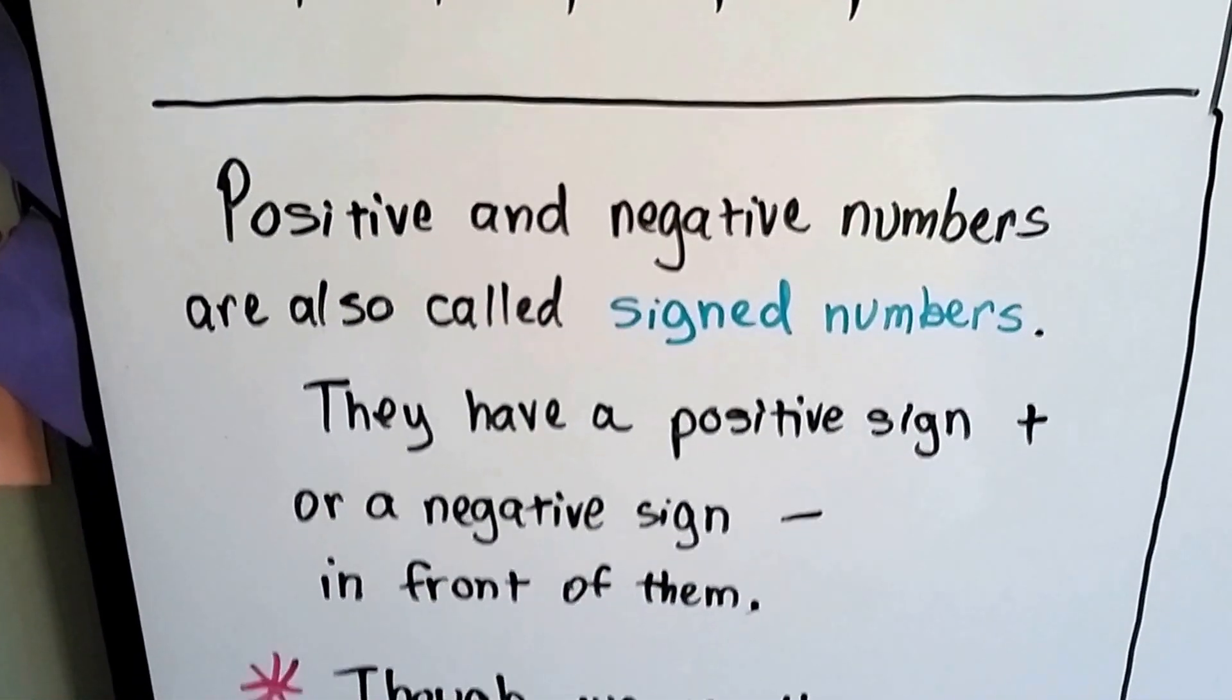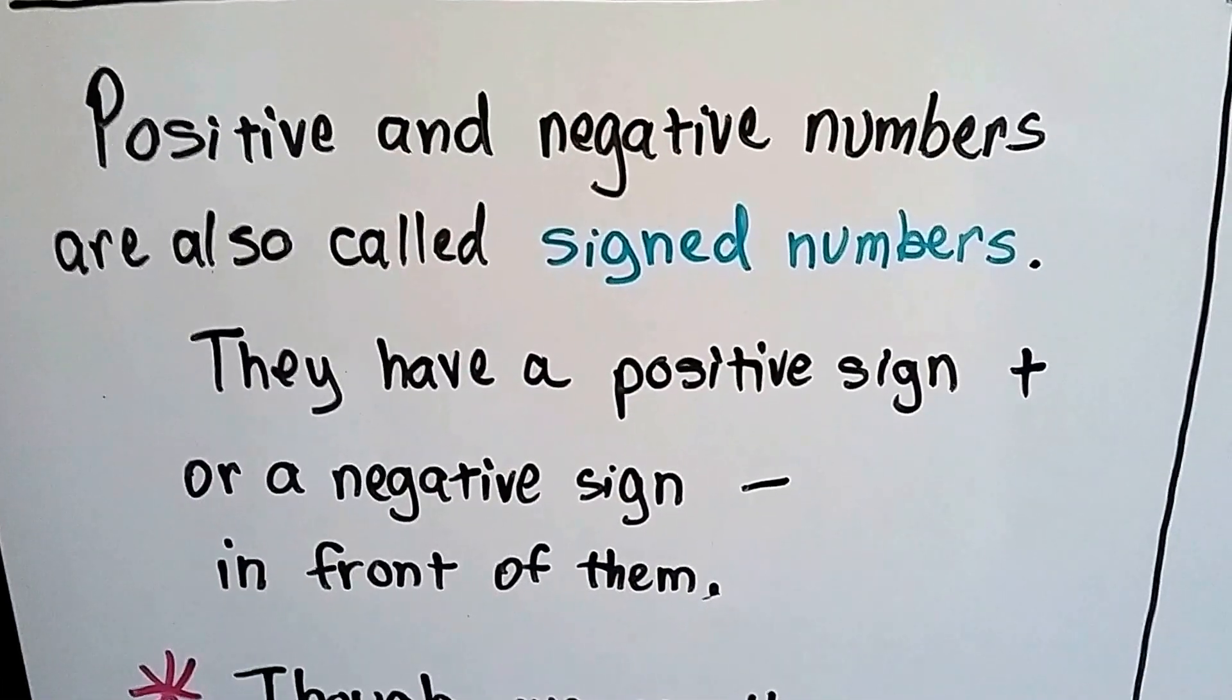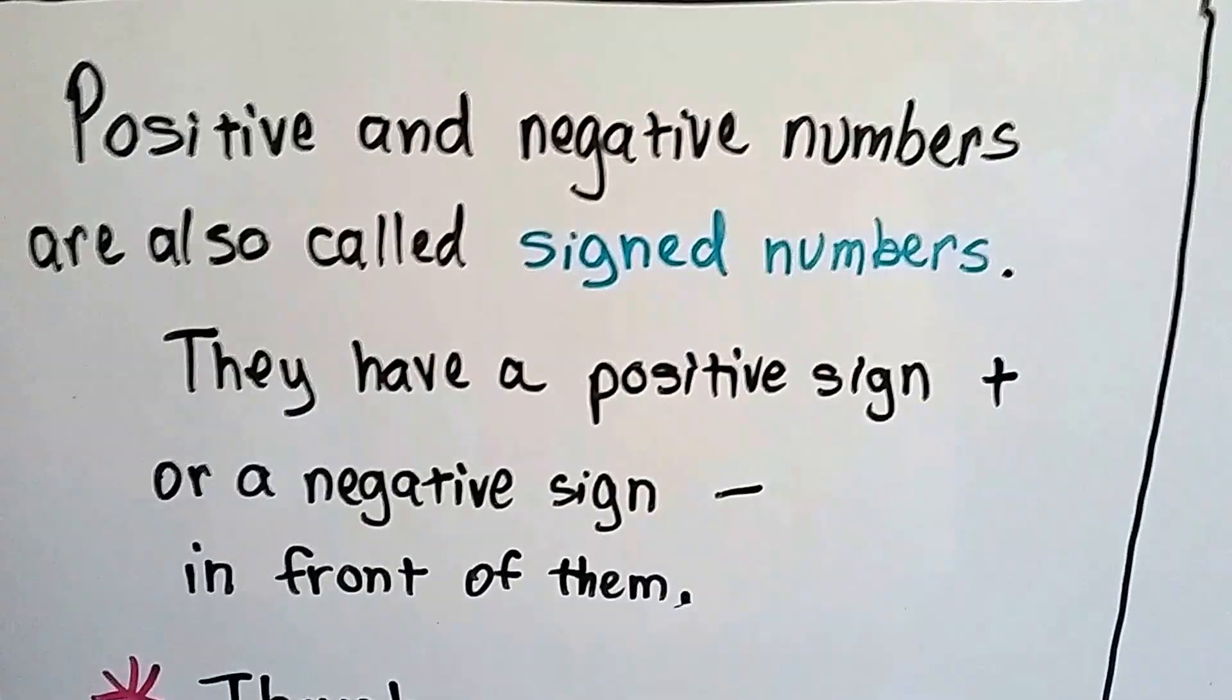Positive and negative numbers are also called signed numbers. They have a positive sign, a plus, or a negative sign, a minus, in front of them.